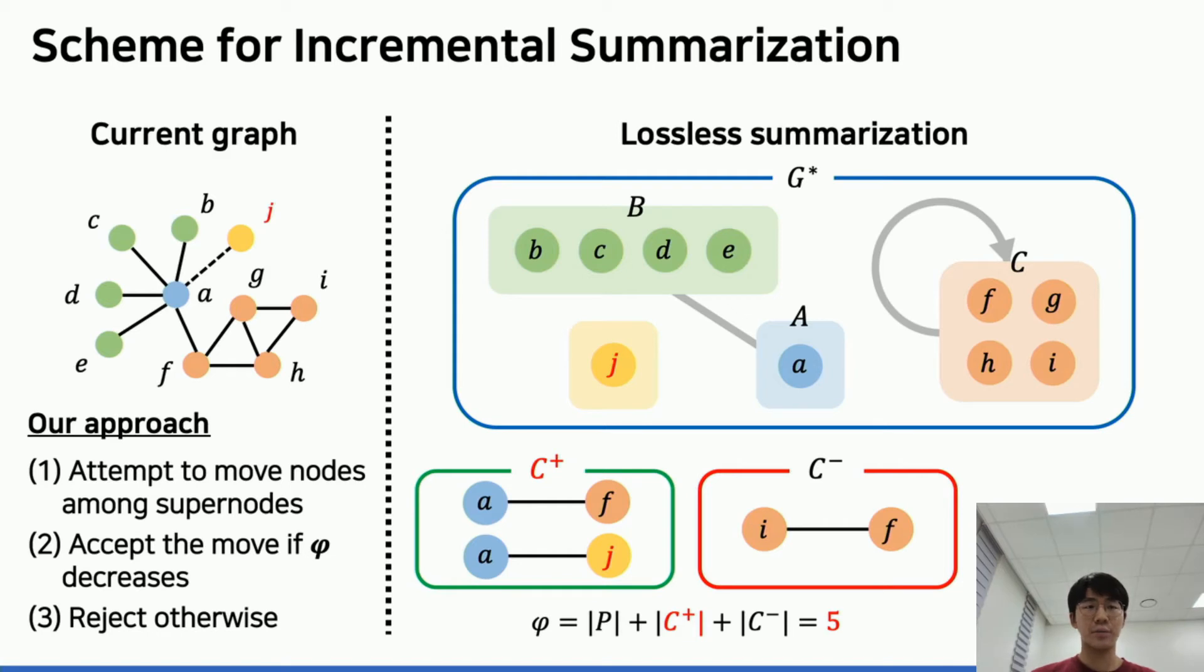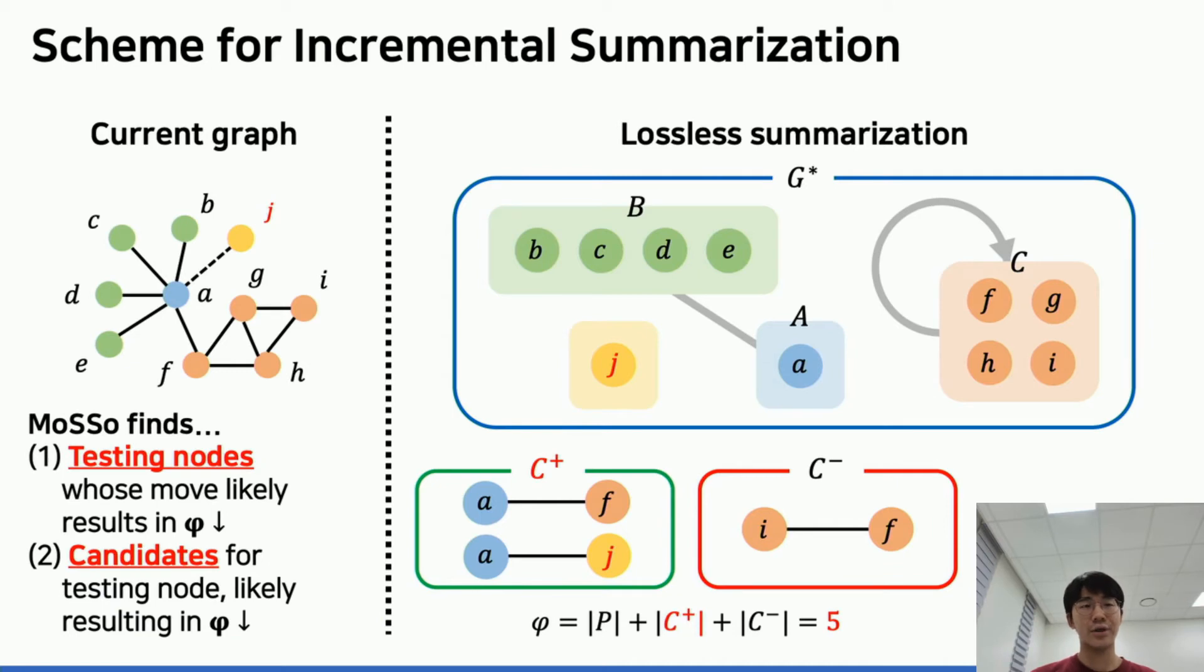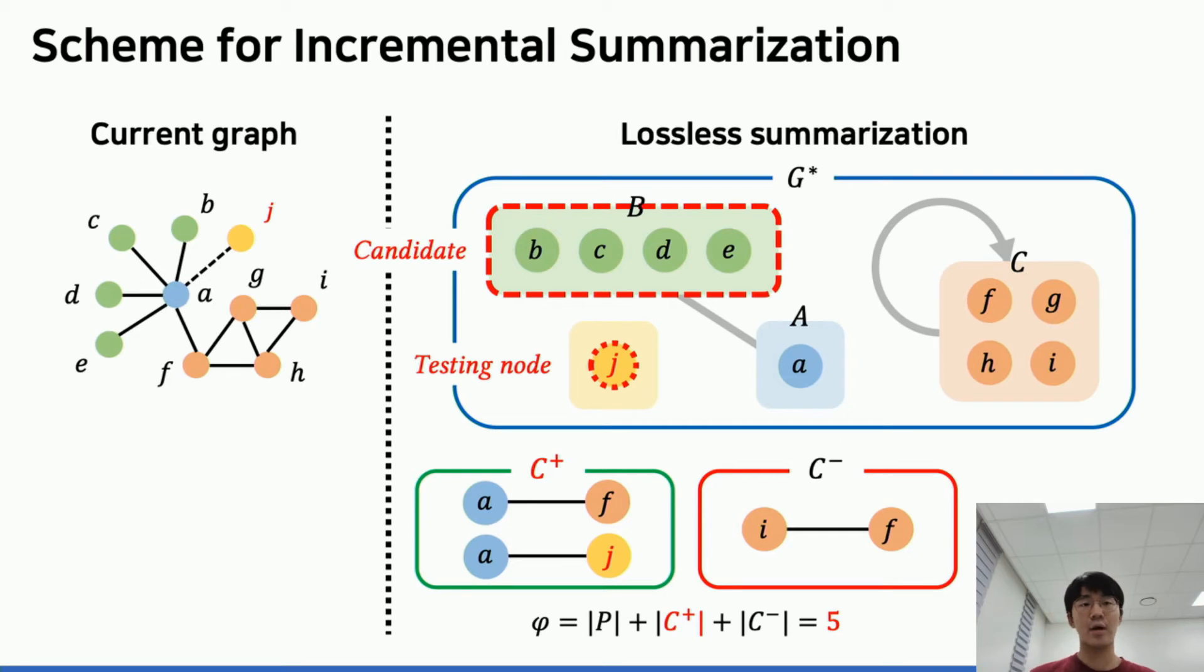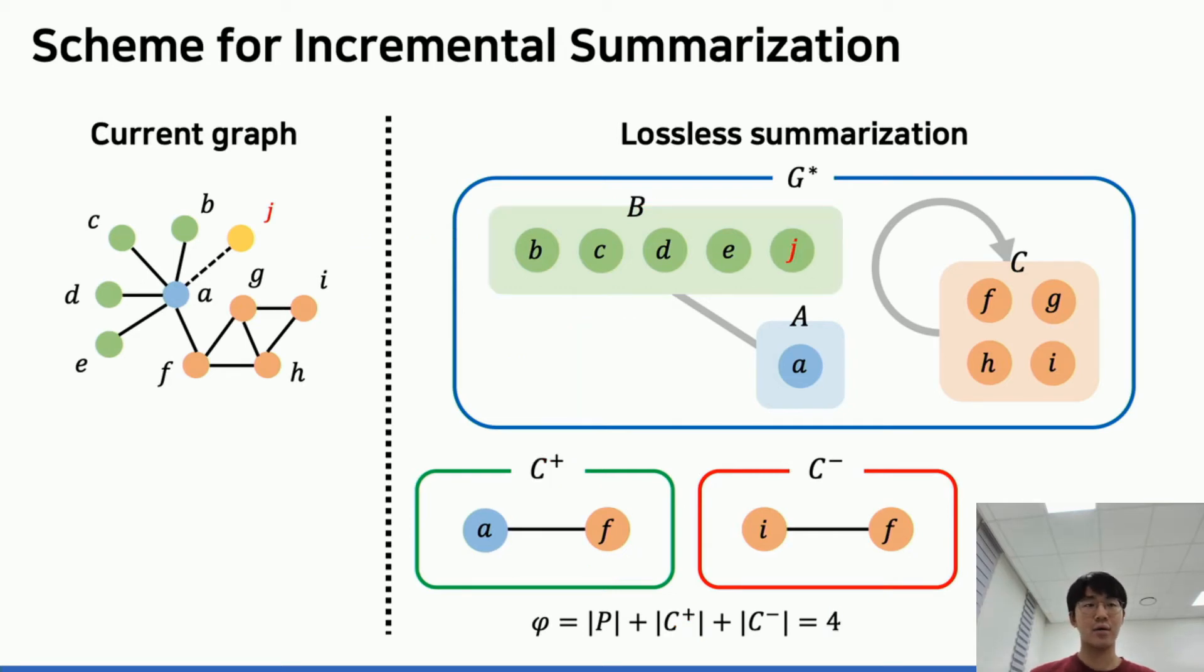Under the new encoding, we accept the move if the description cost decreases, otherwise reject the change. We call such nodes as testing nodes and the super node which should enlarge by moving nodes as candidates. We call one attempt on a node as testing. Our algorithm finds good testing nodes whose move is likely to decrease the cost and proposes good candidates. After moving the yellow node into the green super node, we no longer need the edge in C^+, so the description cost decreased by 1.